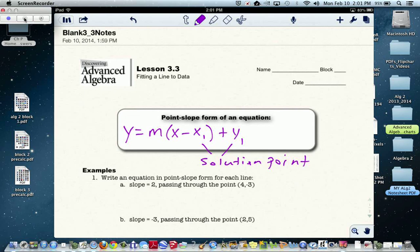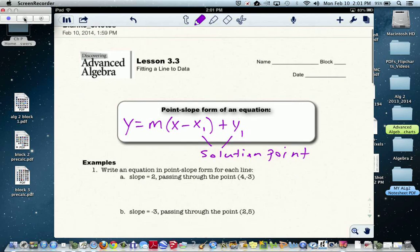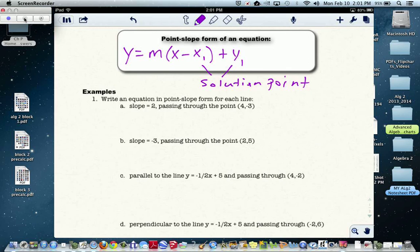All you have to do is fill in all the information, and at times we may have to simplify it. So in this first example, it says write an equation in point-slope form for each line.